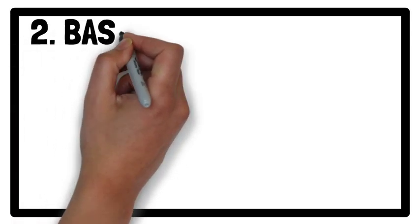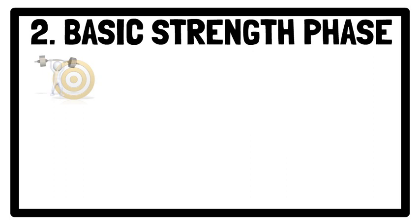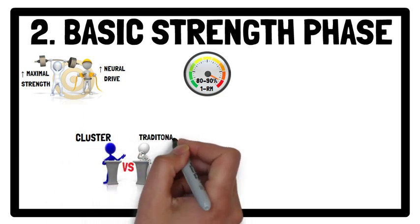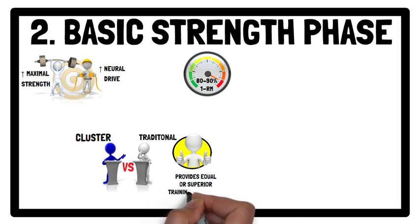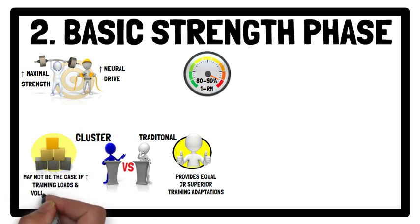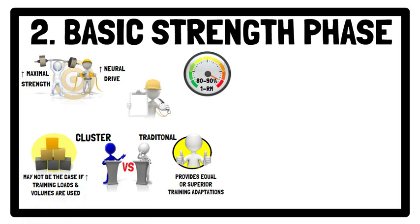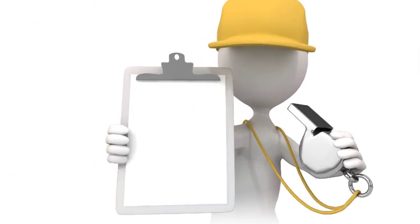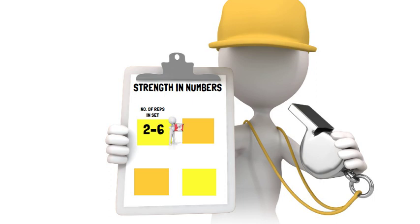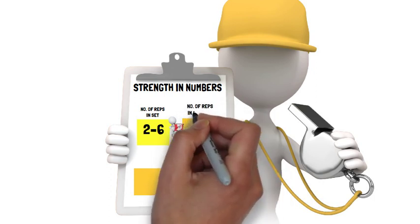Moving on to the basic strength phase — the primary goal is to increase maximal strength and neural drive. To achieve this, a higher training intensity, for example between 80–90% of 1 repetition maximum, is recommended. Traditional sets are likely to provide equal or superior training adaptations compared to cluster sets when training loads are equated. However, this may not be the case if the greater training loads and volumes permitted by cluster sets are incorporated. Low to moderate repetition schemes, for example 2–6 repetitions, are recommended when targeting basic strength. Cluster sets are unlikely to provide greater maximal strength gains compared to traditional sets.